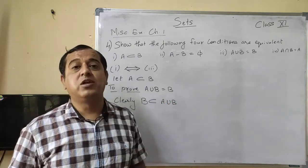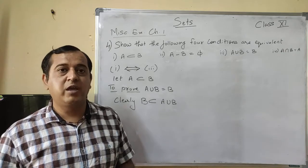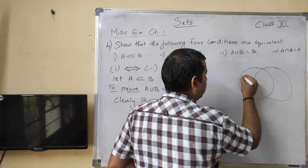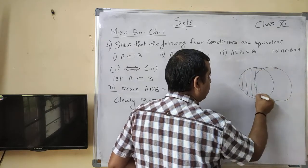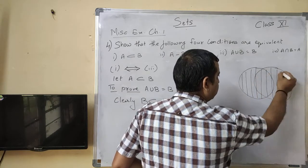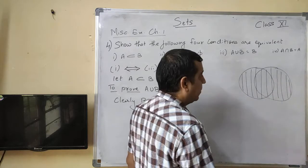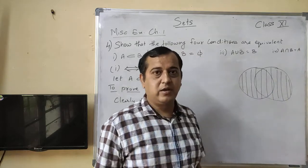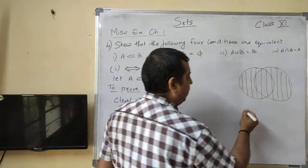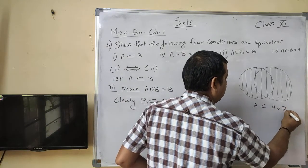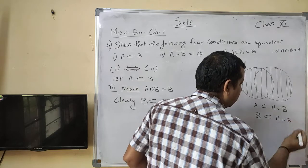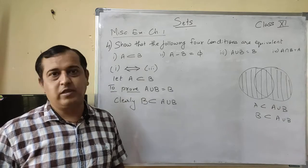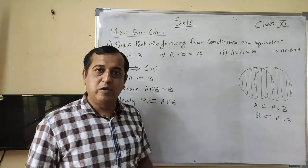A ∪ B में elements कौन से आते हैं? A ∪ B में elements आते हैं A के भी और B के भी. यह आपका A है, यह आपका B है. आप देख सकते हैं A और B के सब elements आ रहे हैं, मतलब B के तो elements आ ही रहे हैं. इसलिए B clearly A ∪ B का subset है. In fact, A भी A ∪ B का subset है और B भी A ∪ B का subset है — जिन दो sets से union बनता है, उनके component sets हमेशा उसके subsets ही रहते हैं. So B is subset of A ∪ B — यह हमें पता है.